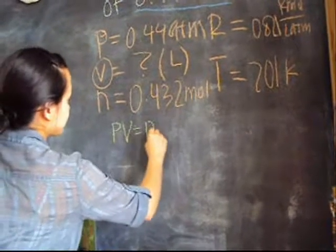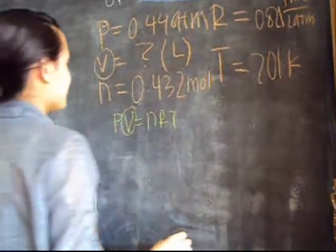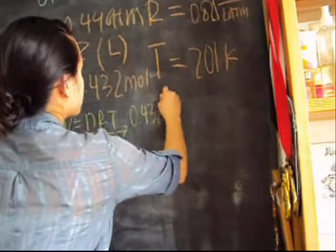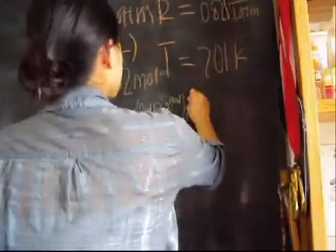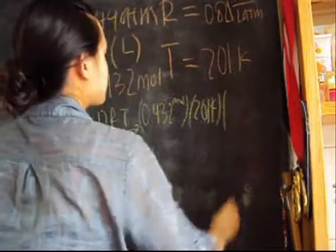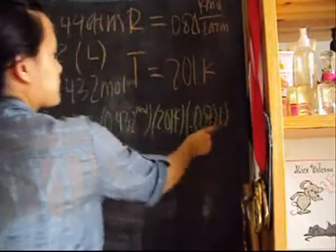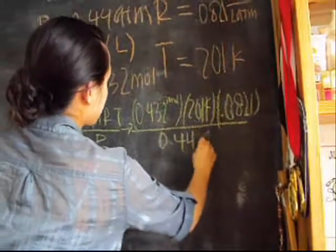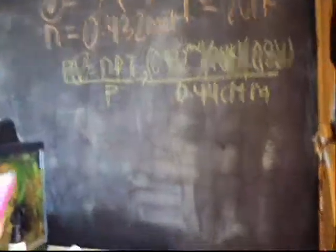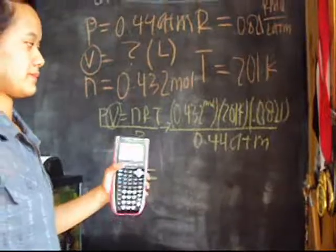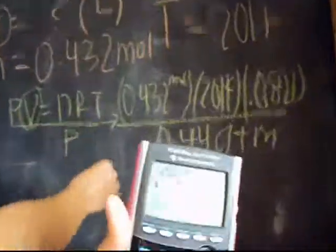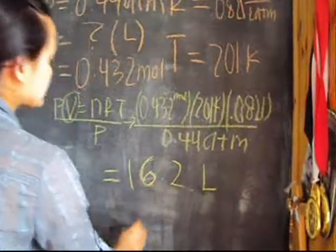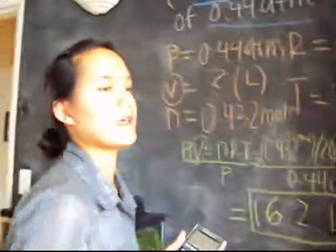You would use the formula for PV=NRT, and you are trying to find V. So you divide both sides by P. You know your moles, which is 1.32 moles. You know your T, which is 201 K. You know your constant, 0.0821. Divided by your P, which is 0.44 ATM. Use your calculator and you will get 16.2 liters. That is how you solve a PV=NRT problem.